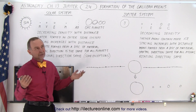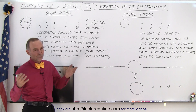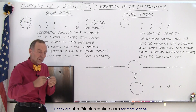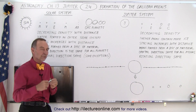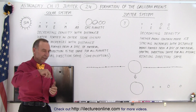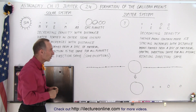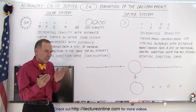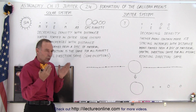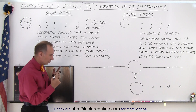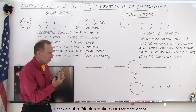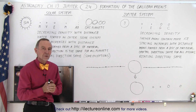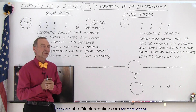We also have the dwarf planet Pluto, which also has its axis tipped over past the 90-degree point. But except for those exceptions, we can see that all the planets in the solar system rotate in the same direction, just like the moons around Jupiter.